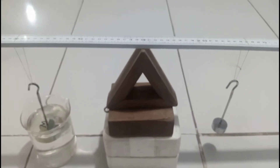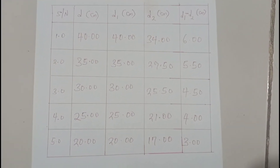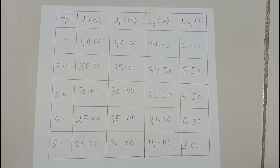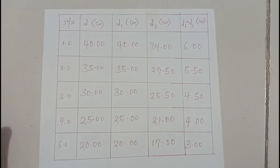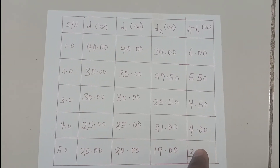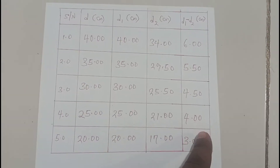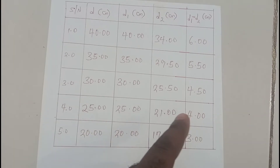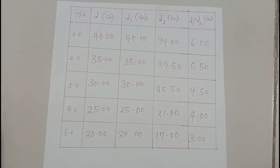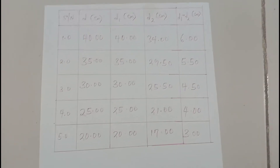This is how our table looks — with columns for d, d1, d2, and d1 minus d2. With this table we are expected to plot a graph of d1 against (d1 minus d2). A graph of d1 against (d1 minus d2) will give a straight line graph through the origin.